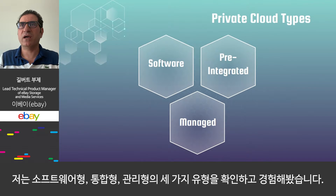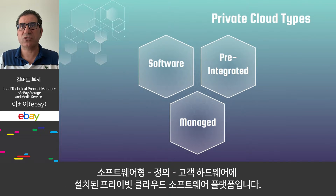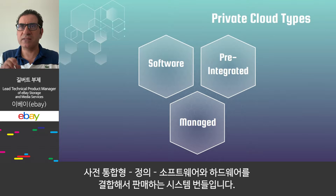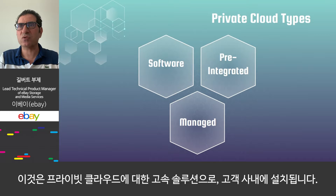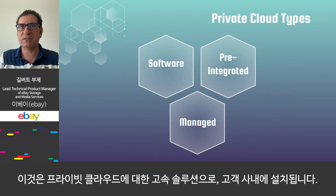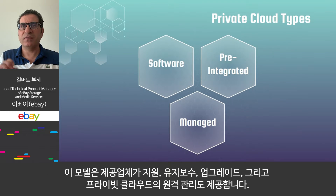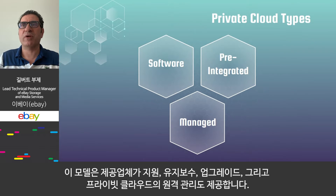What are the private cloud types? I have seen and experienced three types: software, pre-integrated, and managed. Software: a private cloud software platform installed on customer hardware — OpenStack is an example. Pre-integrated: a system bundle sold as a combination of hardware and software; this is a fast-track solution to private cloud per Forrester, installed on customer premises. Managed: a combined hardware and software bundle installed on customer premises where the vendor provides support, maintenance, upgrade, and even remote management of the private cloud.